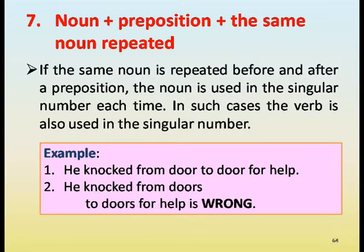Noun plus preposition plus the same noun repeated. If the same noun is repeated before and after a preposition, the noun is used in the singular number each time. In such cases, the verb is also used in the singular. Example: he knocked from door to door for help. 'He knocked from doors to doors for help' is wrong.